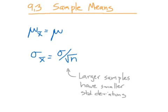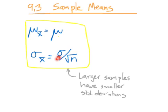We've got two formulas. The mean of x-bar is mu. It's the mean — and think about what that says. It's kind of a goofy formula, but it says the mean of all possible samples, that's mu of x-bar, is the same thing as the mean of the population. The standard deviation of all possible x-bars is the standard deviation of the population divided by the square root of n.